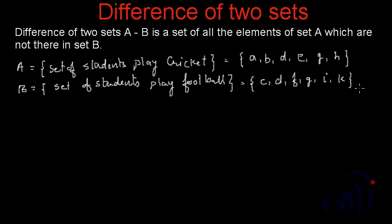So set A is the set of students who play cricket and set B is the set of students who play football. The students who like to play cricket are A, B, D, E, G and H, and the students who like to play football are C, D, F, G, I and K. Then what is A minus B?